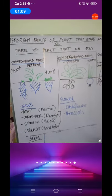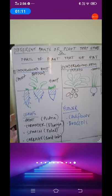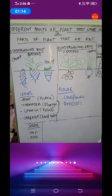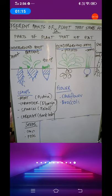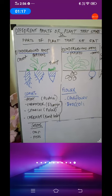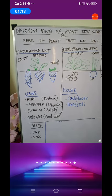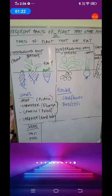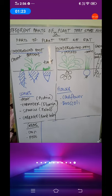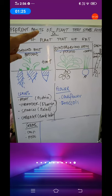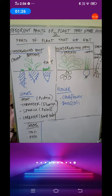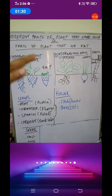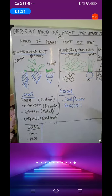Now why is the plant storing that food? The plant stores food for itself because it is extra food — the plant doesn't require it at that time. And also, we humans sometimes eat that part. The parts of the plant that we eat are where the plants have actually stored the food. So today we will see which parts plants use to store food.